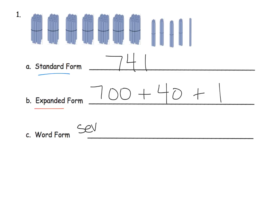And then the word form is basically you take the expanded form and you write it into words. So seven hundred forty-one. Each one of these has its words: 700 right here, 40, and 1.